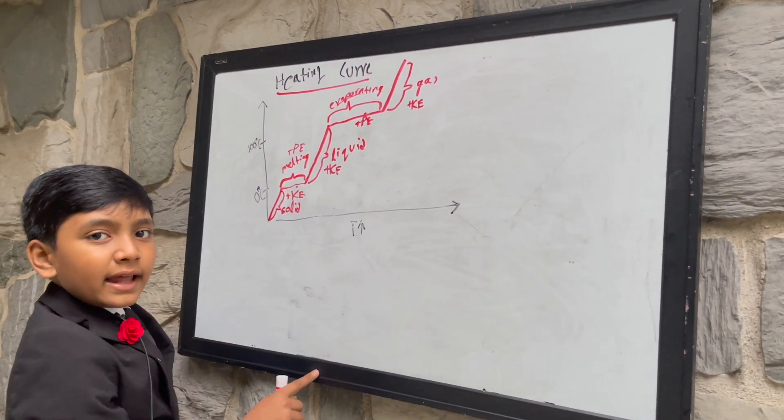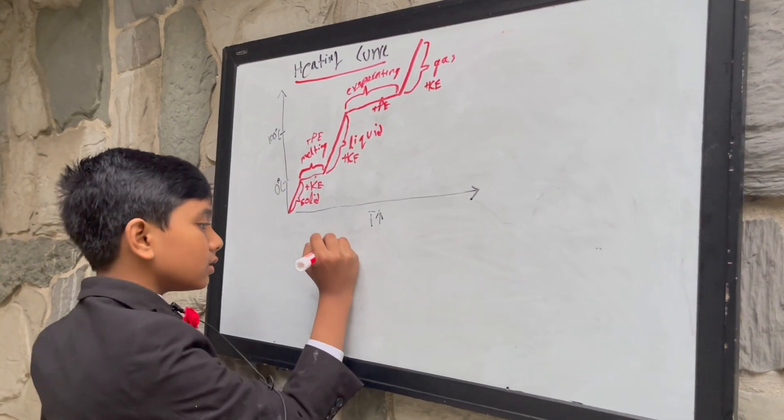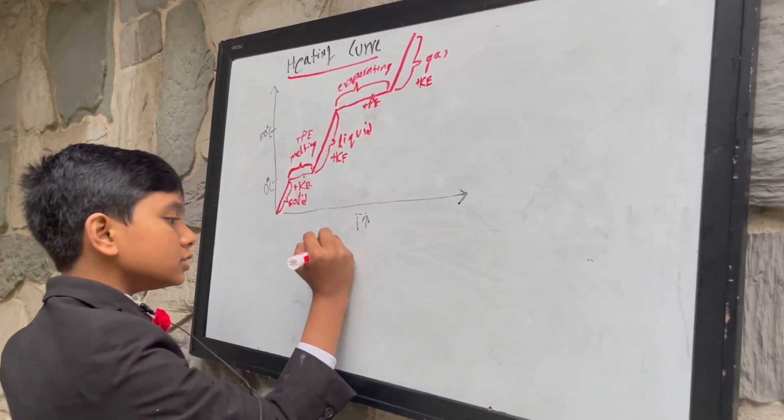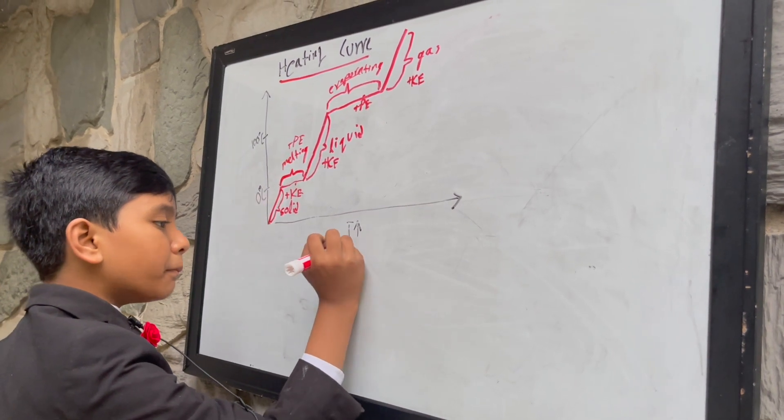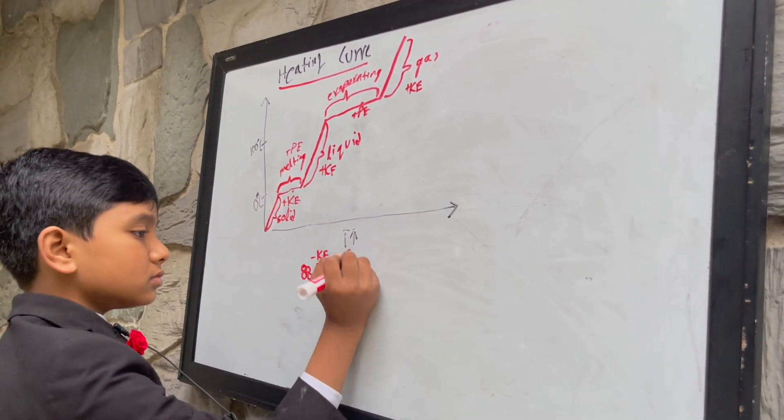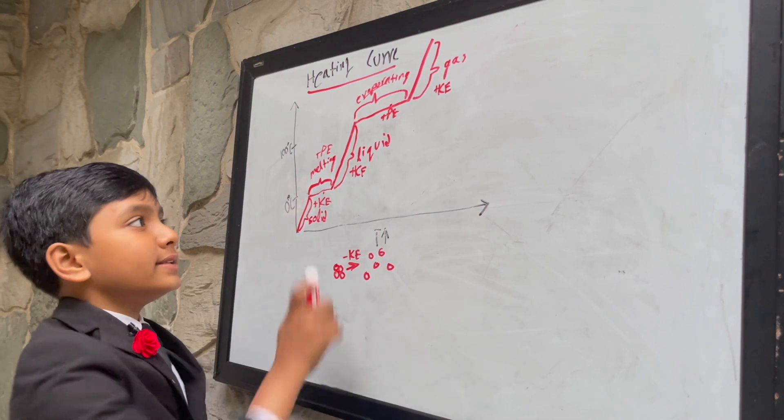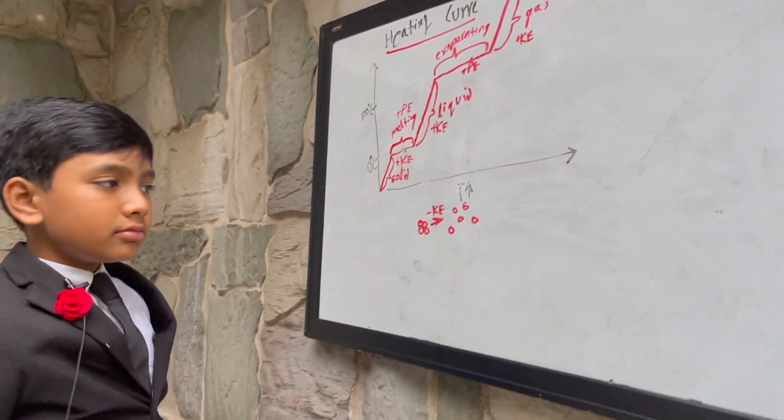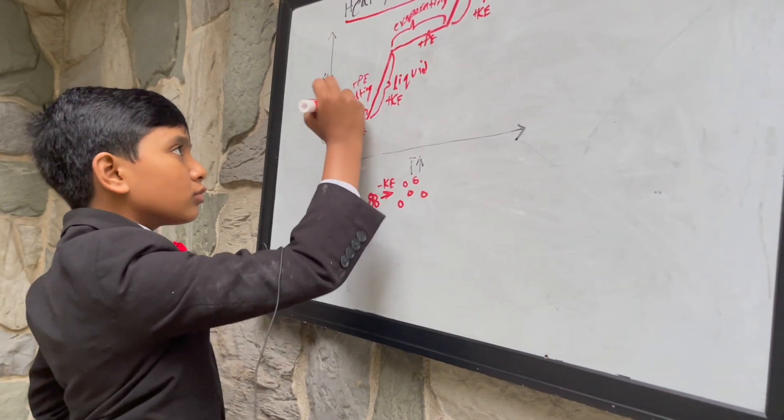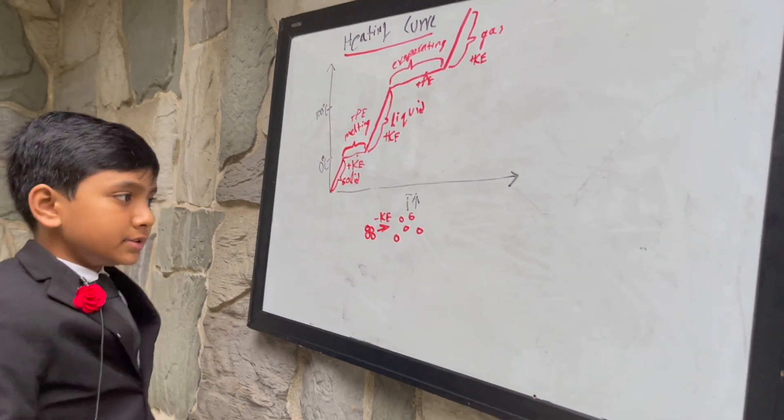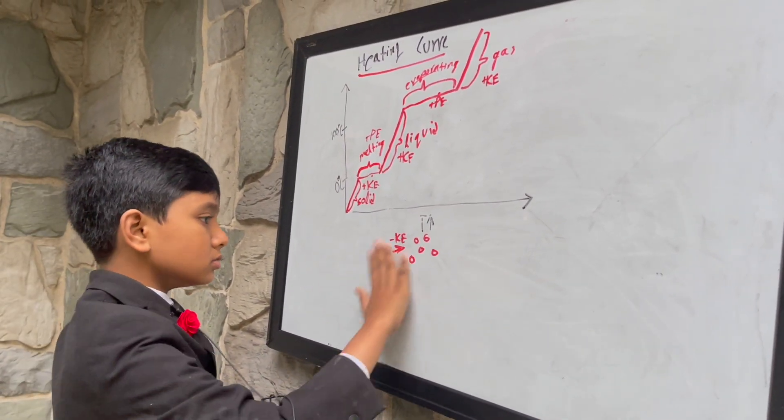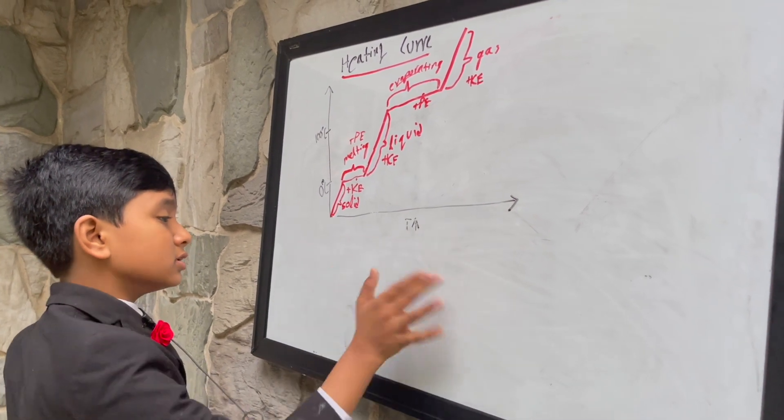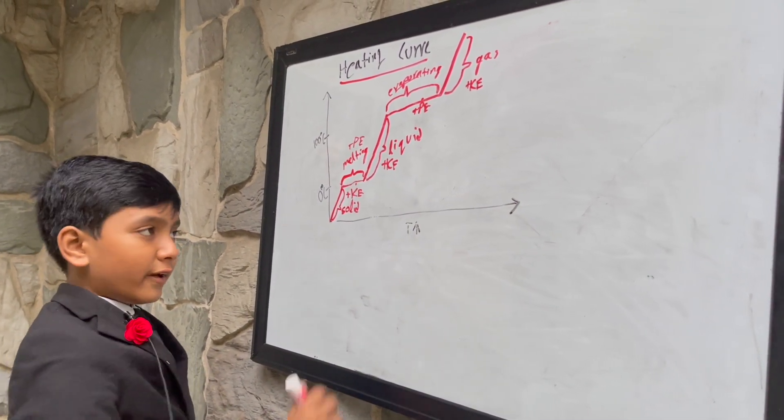all the kinetic energy obtained from heat is used to break apart the bonds in solids and in liquids. So, this causes only potential energy to increase. Because, of course, of the conservation of energy.